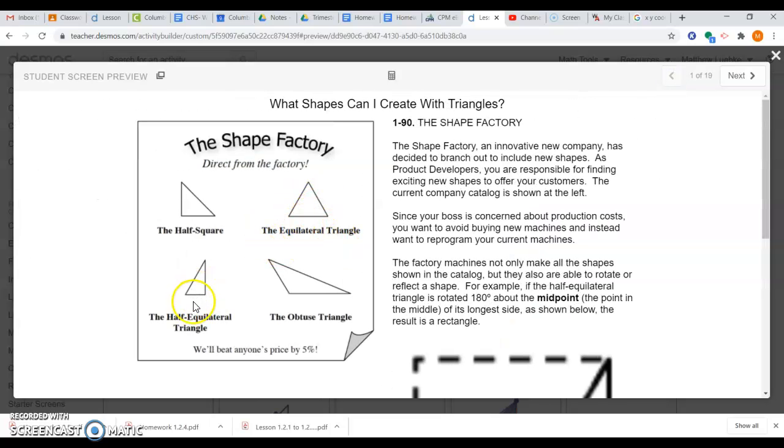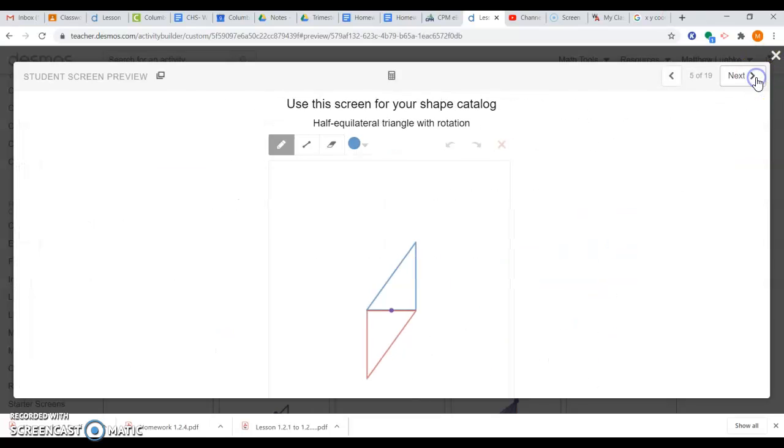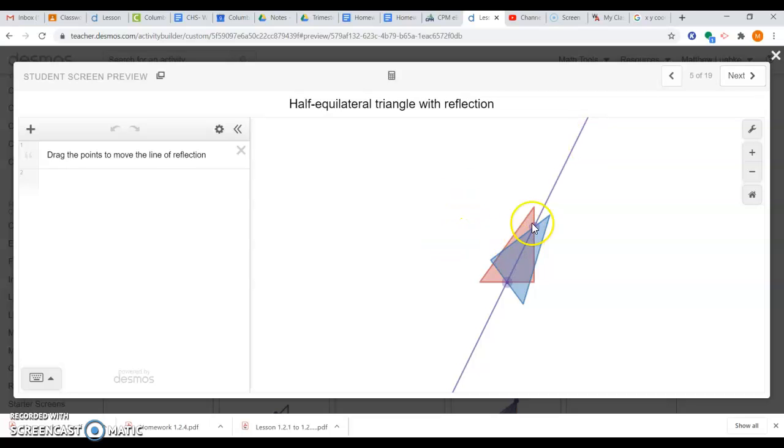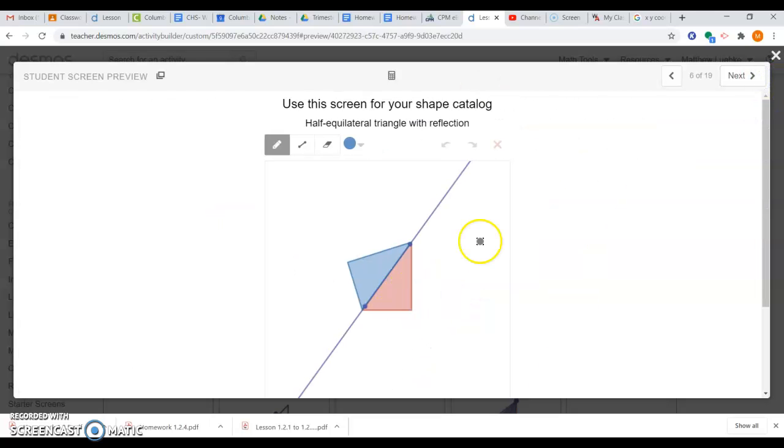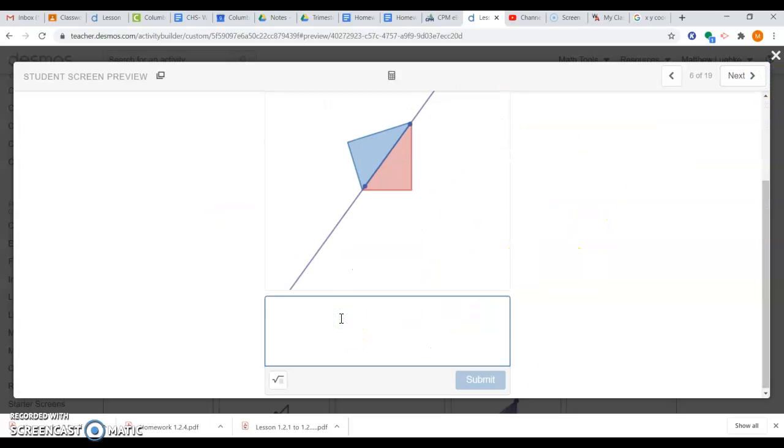All right, so that was half equilateral triangle down here, not the half square, I wanted to reassure that there. And so here, this is kind of a funny one, that purple line is going to be our line of reflection. And so you kind of got to be creative with how you move it around. But if I move it to here, move the two points on the ends there, and I'm pretty much just reflecting that shape, then I'm reflecting that half equilateral triangle about that longest side. I have created a kite.